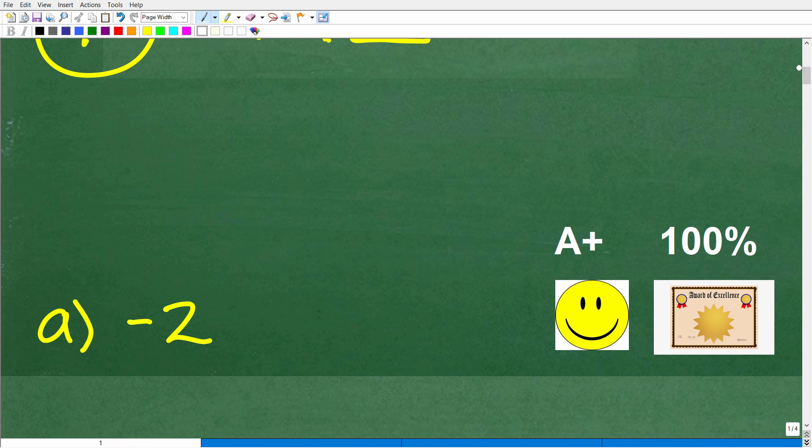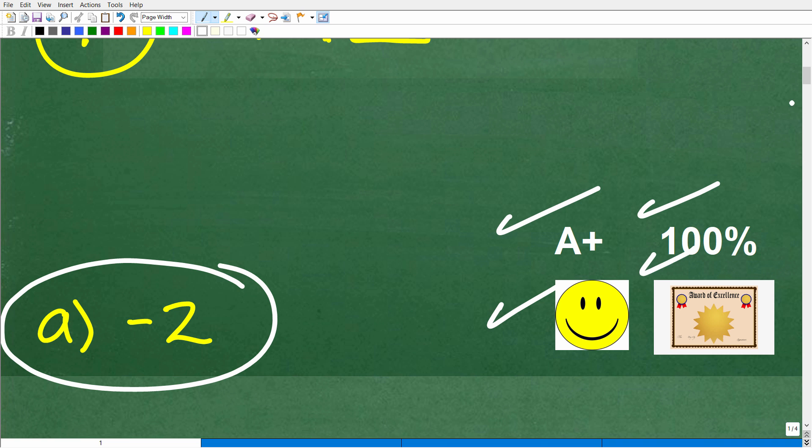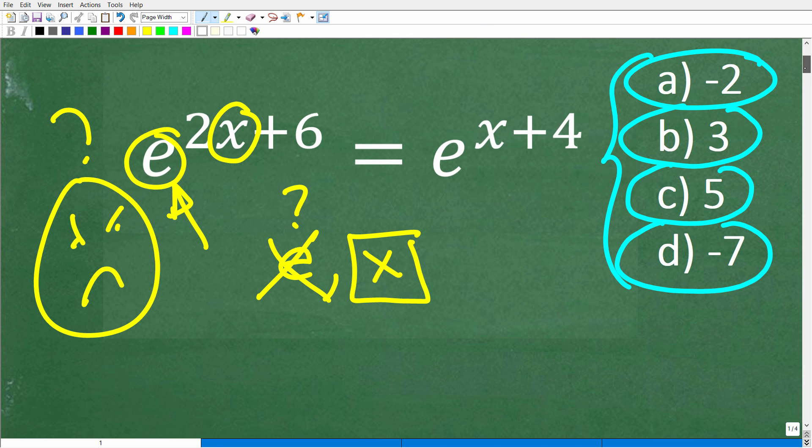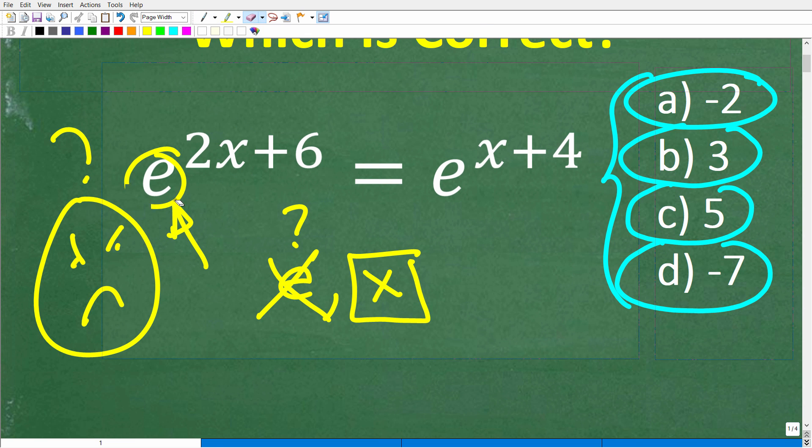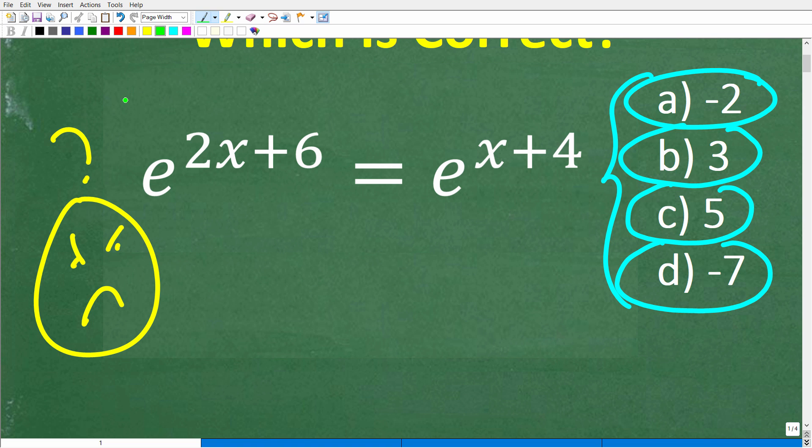Let's take a look at the answer to this equation. The answer is a, x is equal to negative 2. If you got this right, you definitely get a happy face and a plus, a 100%, and a certificate of excellence, because you appear to be a certified professional expert in the area of exponential equations.